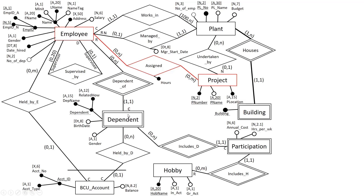With the many-to-many relationship between dependents and hobbies decomposed using the participation gerund, our ERD is in this state. I'm going to suggest that you decompose the many-to-many relationship between employees and projects yourself, and if you want to check your work, this is illustrated on page 116 of the book. If you have questions, feel free to reach out.